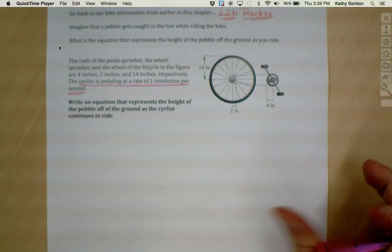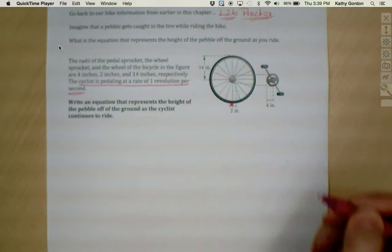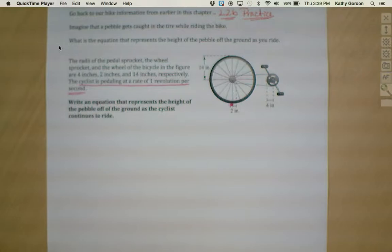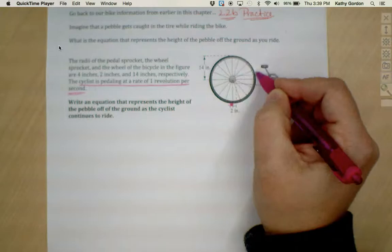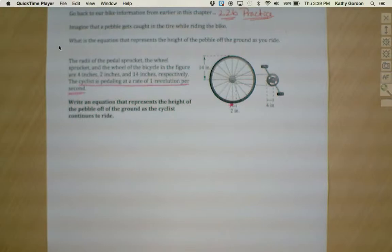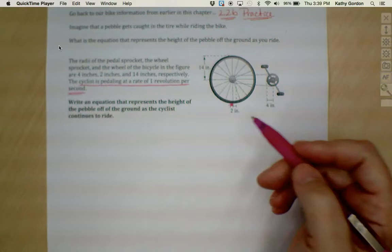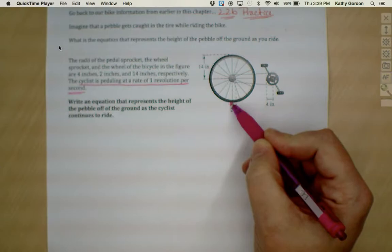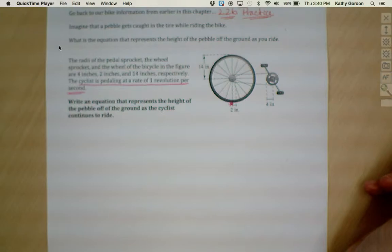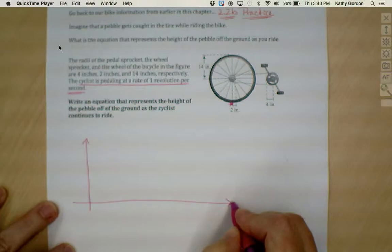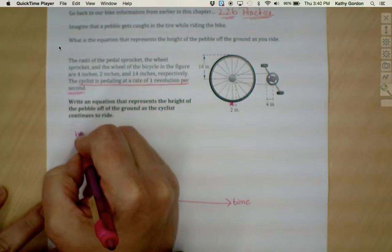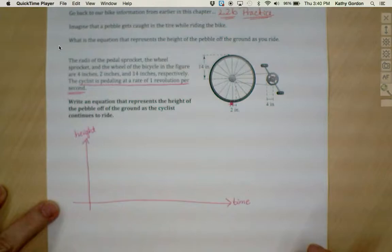We're imagining that this pebble gets stuck in the tire right here. It's going to stay stuck in the tire as the cyclist continues to ride, so it's going to rotate around as the tire rotates. The first thing to help us set this up so that we can write the equation is to try to sketch a graph of what's happening in terms of the height of this pebble with respect to time.